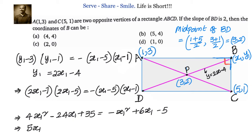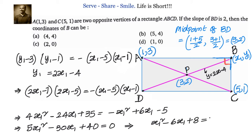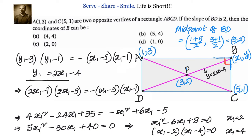Bringing everything to the left side gives 5X1 squared minus 30X1 plus 40 equals 0. Dividing by 5 gives X1 squared minus 6X1 plus 8 equals 0. Factoring: X1 minus 2 times X1 minus 4 equals 0, so X1 equals 2 or X1 equals 4. If X1 equals 2, then Y1 equals 2 times 2 minus 4, which is 0. If X1 equals 4, then Y1 equals 2 times 4 minus 4, which is 4. So the correct options are 4 comma 4 and 2 comma 0.